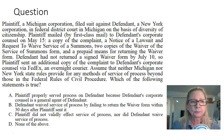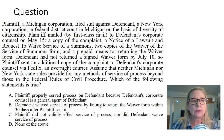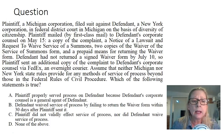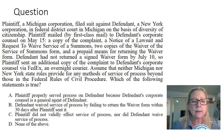Here's a multiple choice question. Plaintiff, a Michigan corporation, filed suit against defendant, a New York corporation, in Federal District Court in Michigan on the basis of diversity of citizenship. Plaintiff mailed by first-class mail to defendant's corporate counsel on May 15th: a copy of the complaint, a notice of a lawsuit and request to waive service of a summons, two copies of the waiver of the service of summons form, and prepaid means for returning the waiver form. Defendant had not returned a signed waiver form by July 10th, so plaintiff sent an additional copy of the complaint to defendant's corporate counsel via FedEx overnight courier. Assume that neither Michigan nor New York state rules provide for any methods of service of process beyond those in the Federal Rules of Civil Procedure.